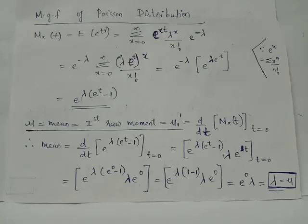In a Poisson distribution, the first raw moment mu 1 prime can be evaluated using the formula d by dt applied on the moment generating function at t equals 0.